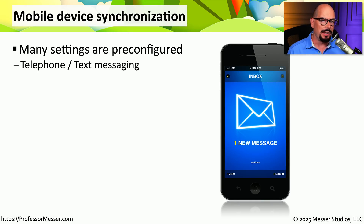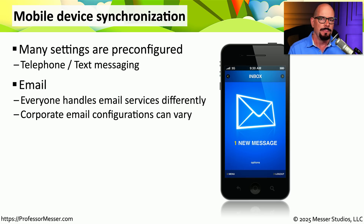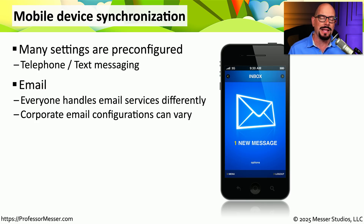The MDM also allows you to configure how this device will be synchronized over the air. Since these devices are rarely plugged into a central facility, we need some way to back up the data stored on these mobile phones. Some settings are already pre-configured — for example, telephone information and messages will always be set up on these devices. But different organizations might use different types of email: one might use Gmail, another might use Microsoft Outlook. The MDM allows you to have all of those configured in one central place.